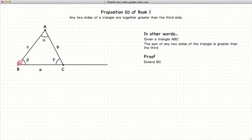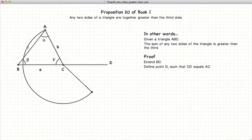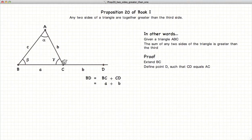To demonstrate this, first we extend the base of our triangle, then we define a point d such that cd is equal to ac. So this is length b, and this is length b. Connect or draw a line between a and d.